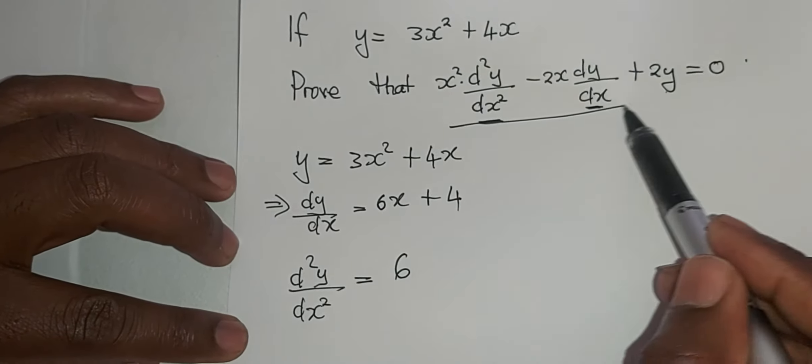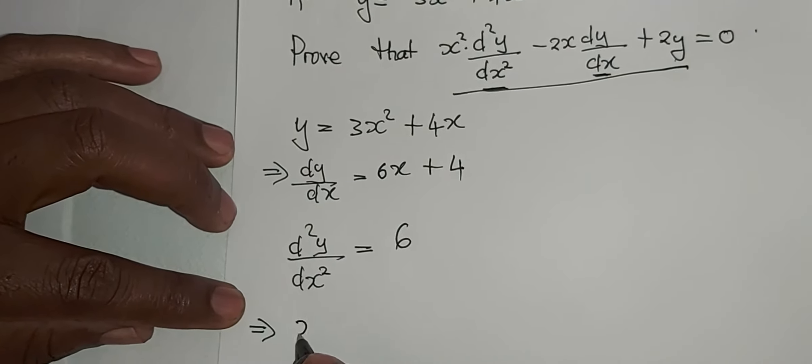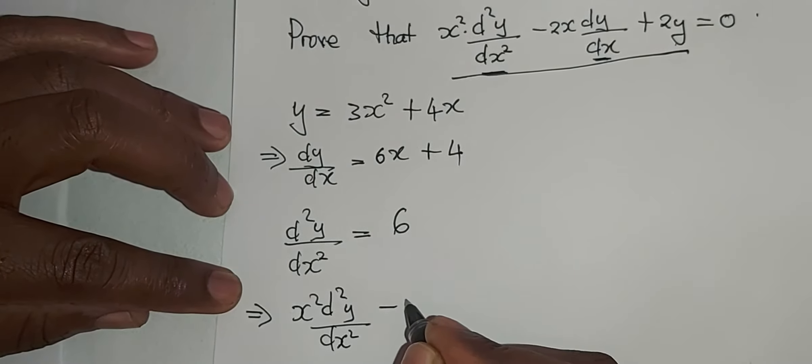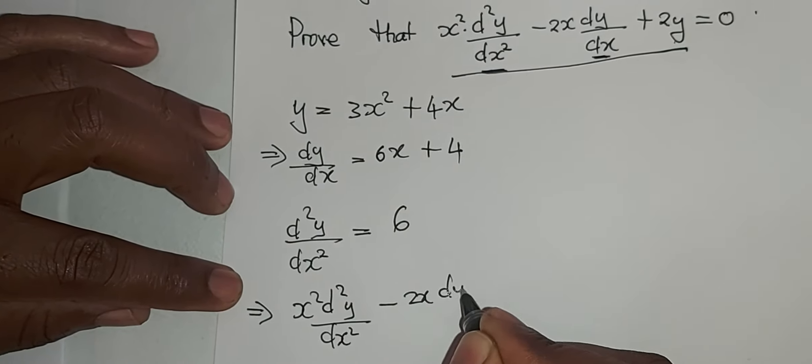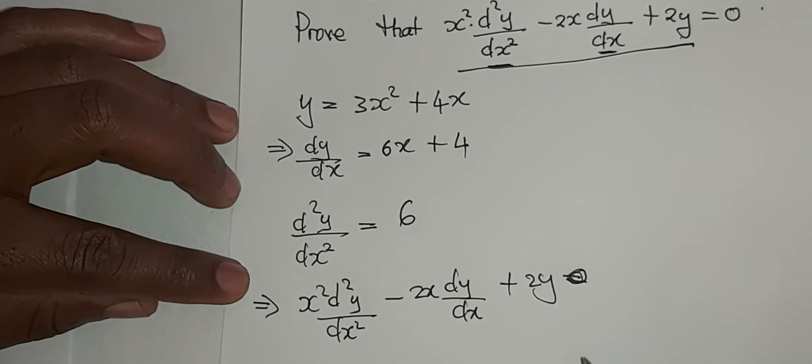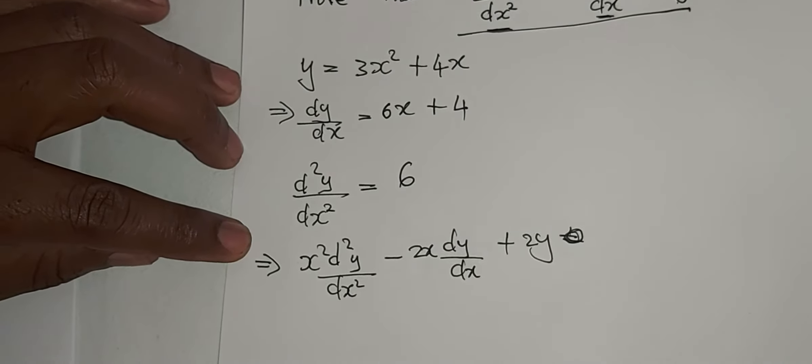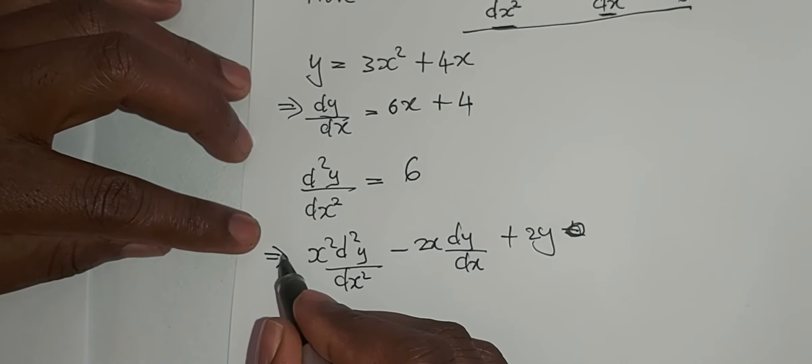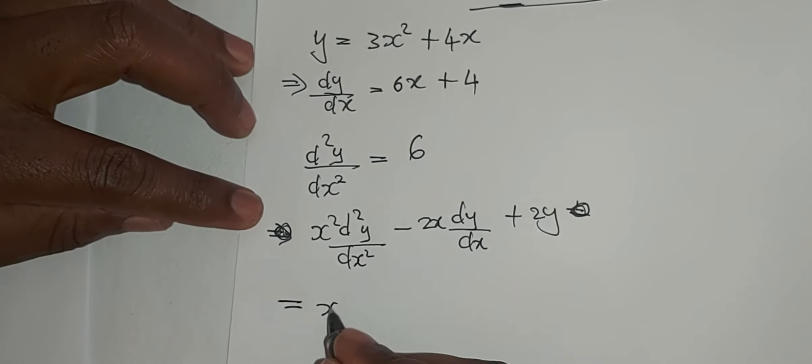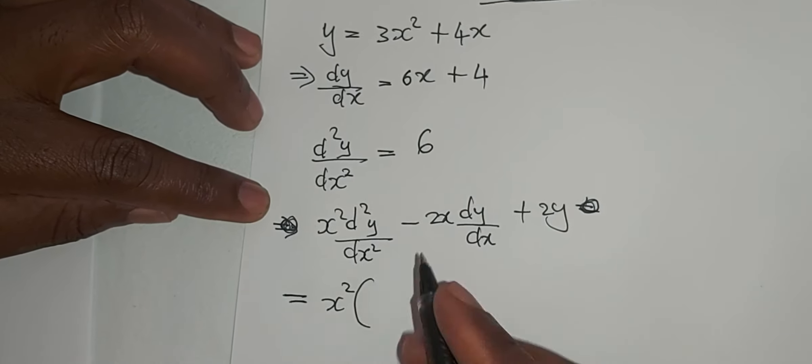As we now rewrite this one, it now means we are saying x squared d squared y over dx squared minus 2x dy dx plus 2y equals this. That's what we must prove. Actually at the end, 0 must be the final answer.